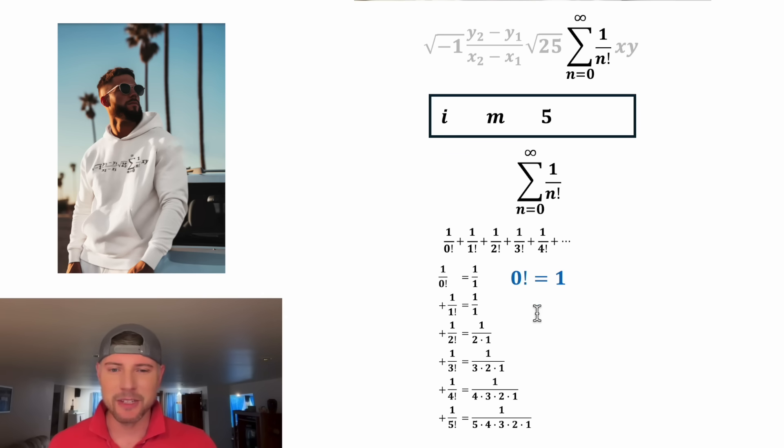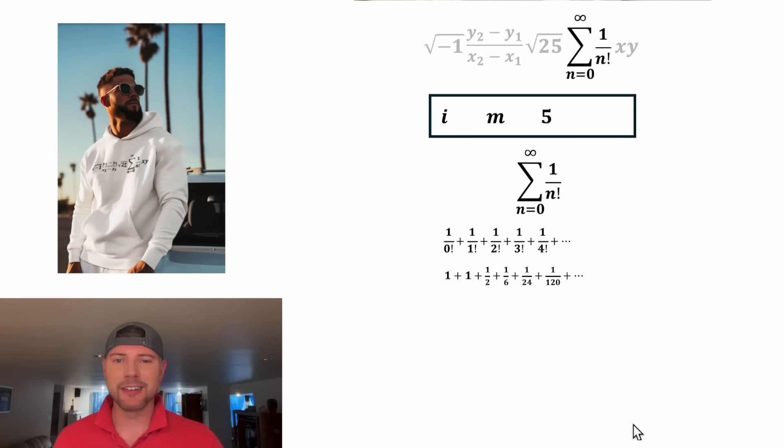But for now, we'll just accept it as equal to 1. And we can take all of these values and add them together. The finite sum of these first 6 terms equals 2.716 recurring, where the 6 will go on forever. Or if we add on 3 more terms, this is approximately equal to 2.71828. And if we let it add up all the terms going on to infinity, that will equal exactly e.